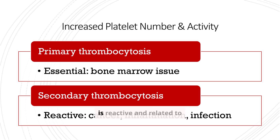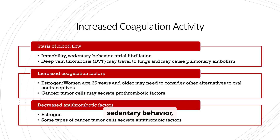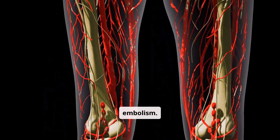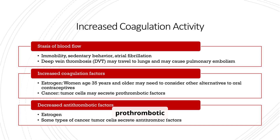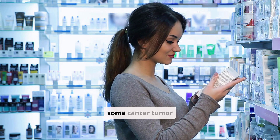Secondary thrombocytosis is related to cancer, inflammation, or infection. Increased platelet activity can result from endothelial injury and sluggish blood flow, with risk increased by smoking, hyperlipidemia, and diabetes. Stasis of blood flow — such as with immobility, sedentary behavior, atrial fibrillation, and deep vein thrombosis (DVT) — can lead to pulmonary embolism. Increased coagulation factors can be seen with estrogen use in women over 35, and some cancer tumor cells secrete prothrombotic factors.